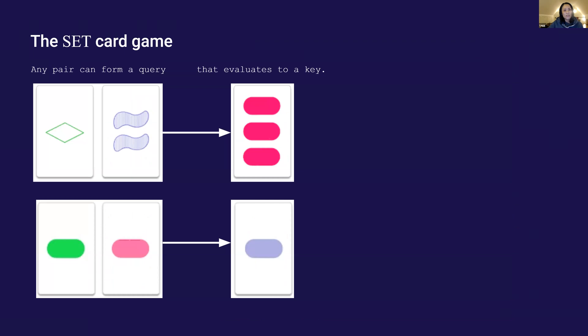Any pairs of cards can form a query that evaluates to a key card. In a complete set of three cards, on any attributes, the cards either have to be the same or all different.